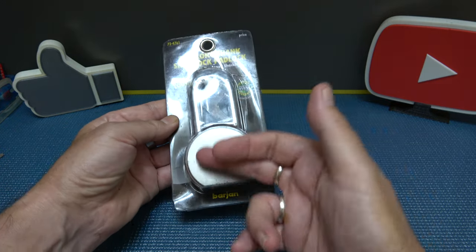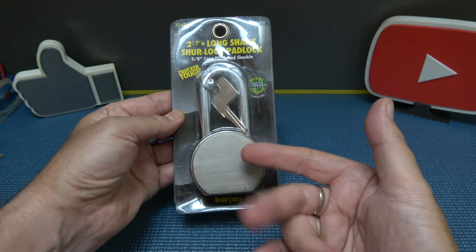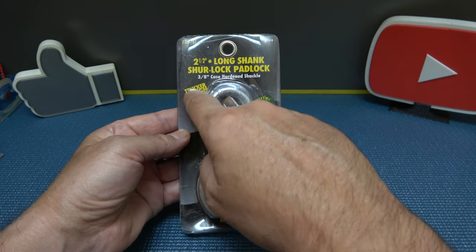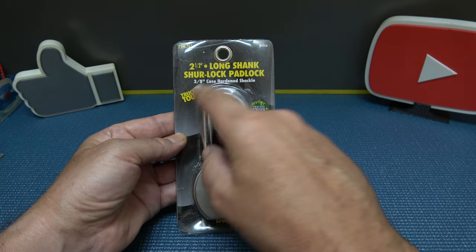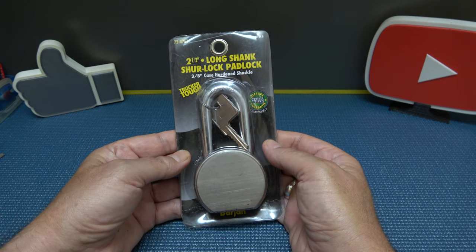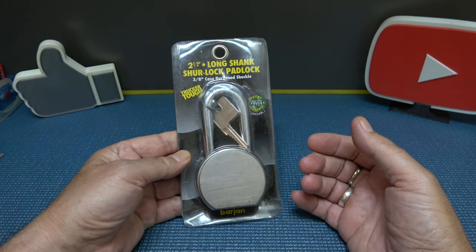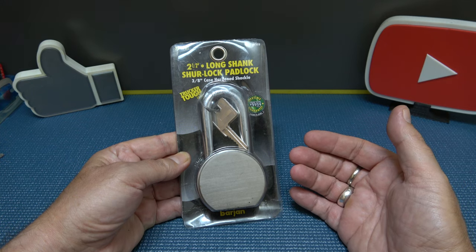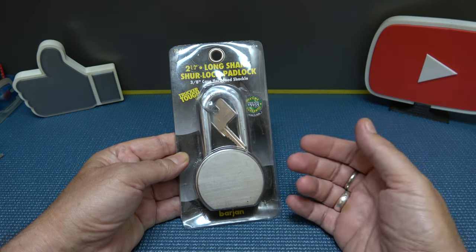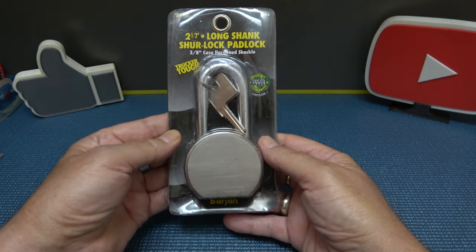I'm guessing this looks like a very generic round body padlock, and I'm guessing 'trucker tough' - this is something they'd probably hang at a truck stop just to aim it at truckers. I mean really, aren't they all?